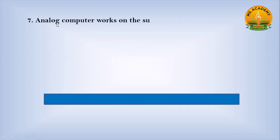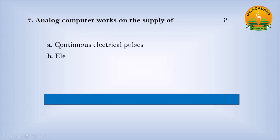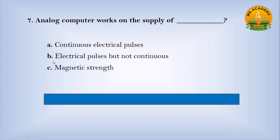Analog computer works on the supply of dash. Option A Continuous electrical pulses, option B Electrical pulses but not continuous, option C Magnetic strength. Answer: A. Number Continuous electrical pulses.